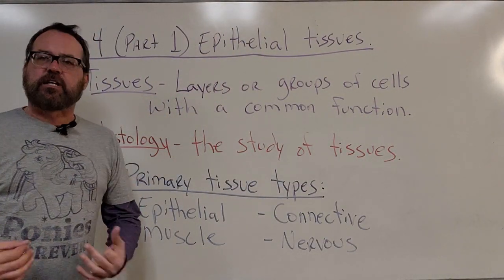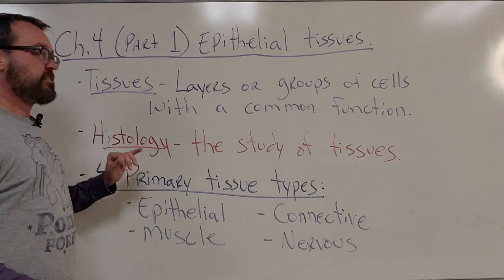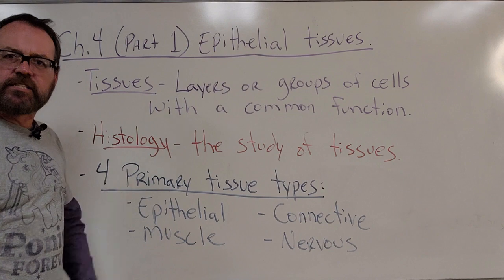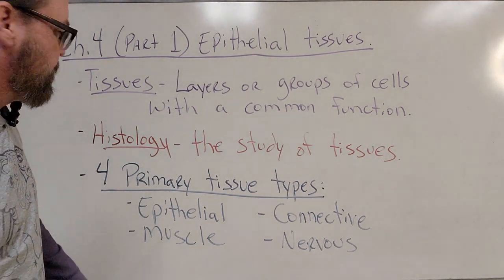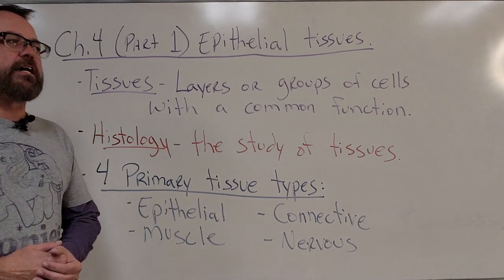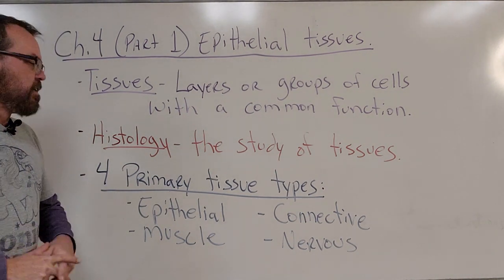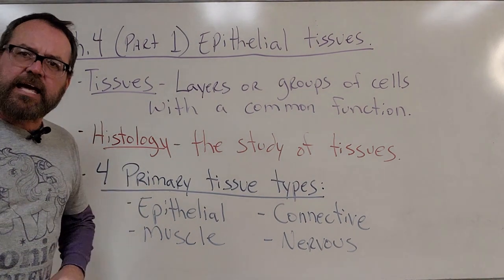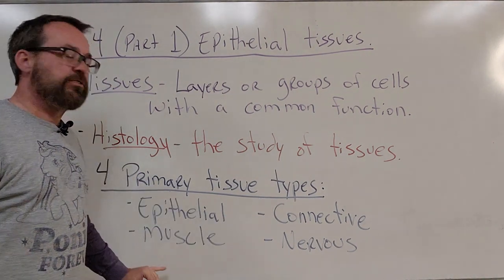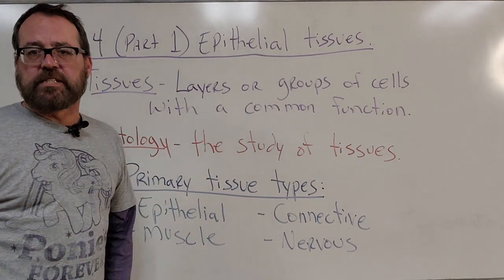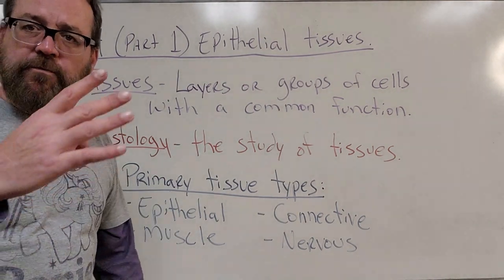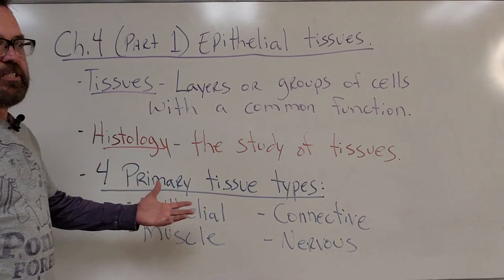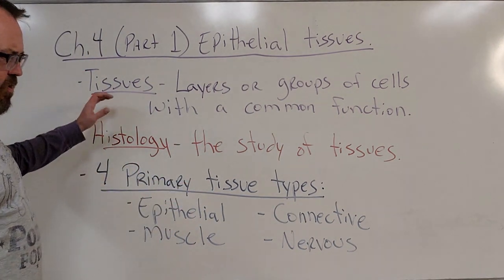Layers or groups of cells with a common function — that is tissue. The study of tissues is called histology. We have four primary types of tissues to cover: epithelial tissues, connective tissues, muscle tissue, and nervous tissue. All four of those are our primary tissue types that we want to be familiar with.